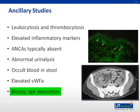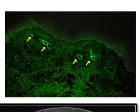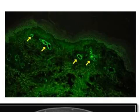Biopsies of the skin and kidney may be warranted in patients with incomplete or unusual presentations. They characteristically show IgA deposition, as previously discussed. Immunofluorescent staining of biopsy specimens reveals IgA deposition in the walls of small vessels of all tissues, as in this photomicrograph of a lesional skin biopsy. Skin biopsies demonstrate vasculitis of the dermal capillaries and postcapillary venules, and the inflammatory infiltrate includes neutrophils and monocytes.